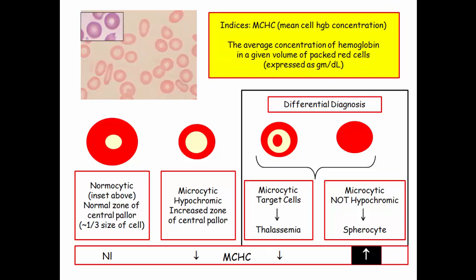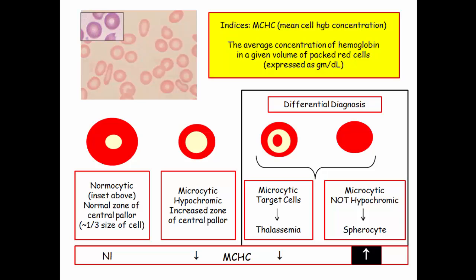That leads into our discussion of indices. The one to pay attention to for this discussion is MCHC. The MCHC is a measure of hemoglobin concentration. In diseases of hemoglobin, such as iron deficiency anemia and thalassemia, the MCHC is decreased. That makes sense — hemoglobin production is impaired. Compare and contrast that with spherocytosis. In spherocytosis, there is nothing wrong with the hemoglobin; this is a disease of the membrane. So even though these cells become microcytic, the MCHC actually increases.